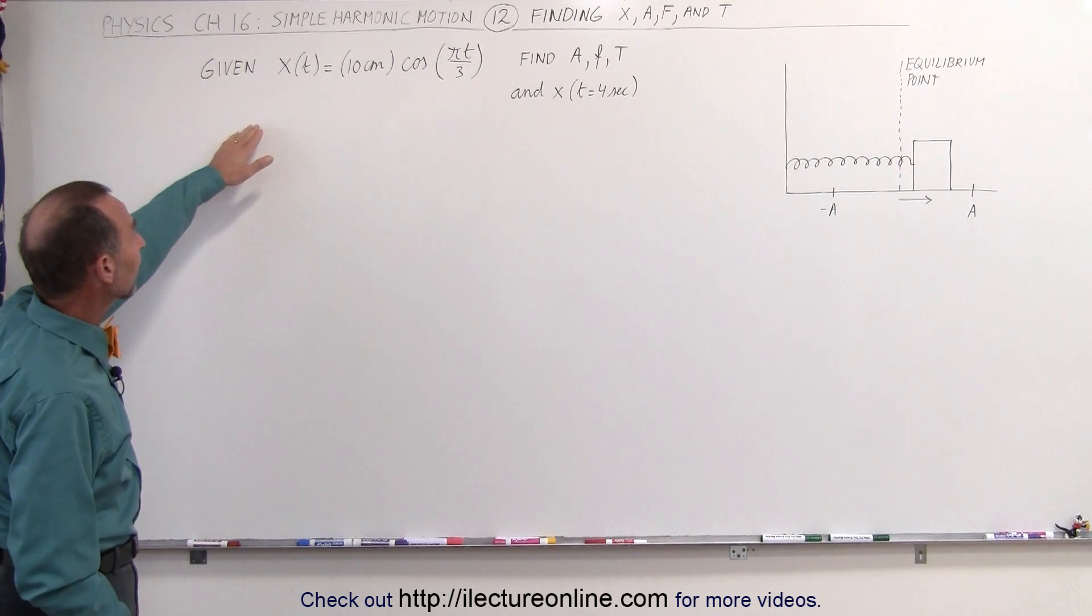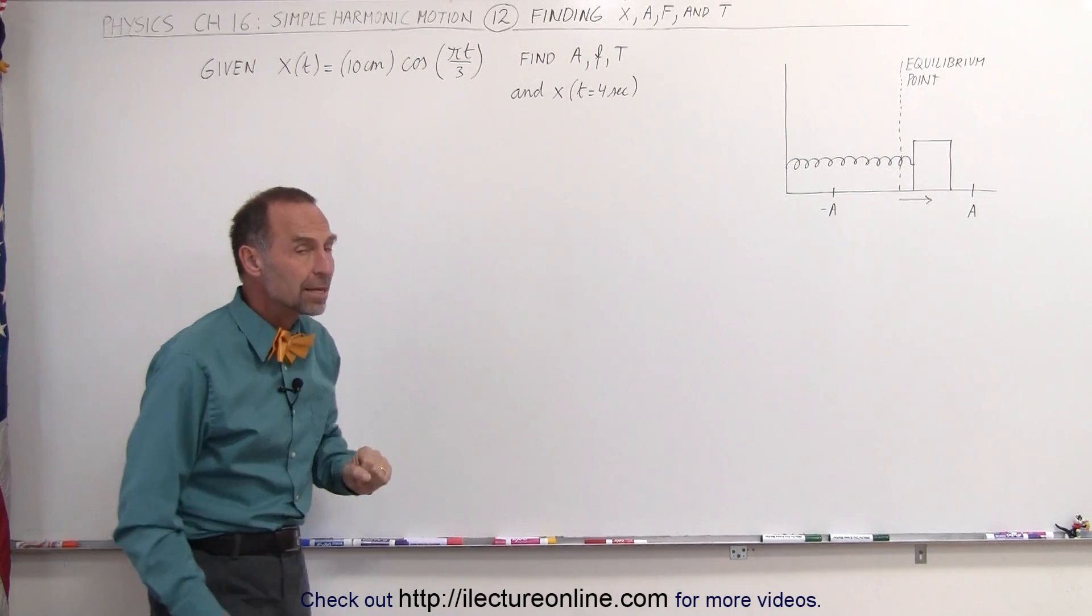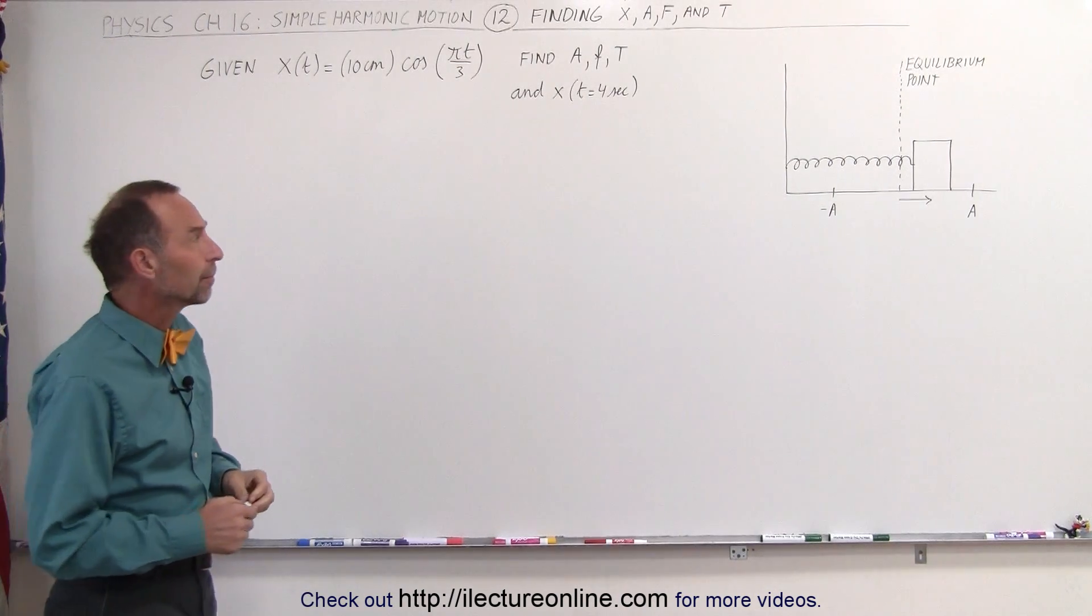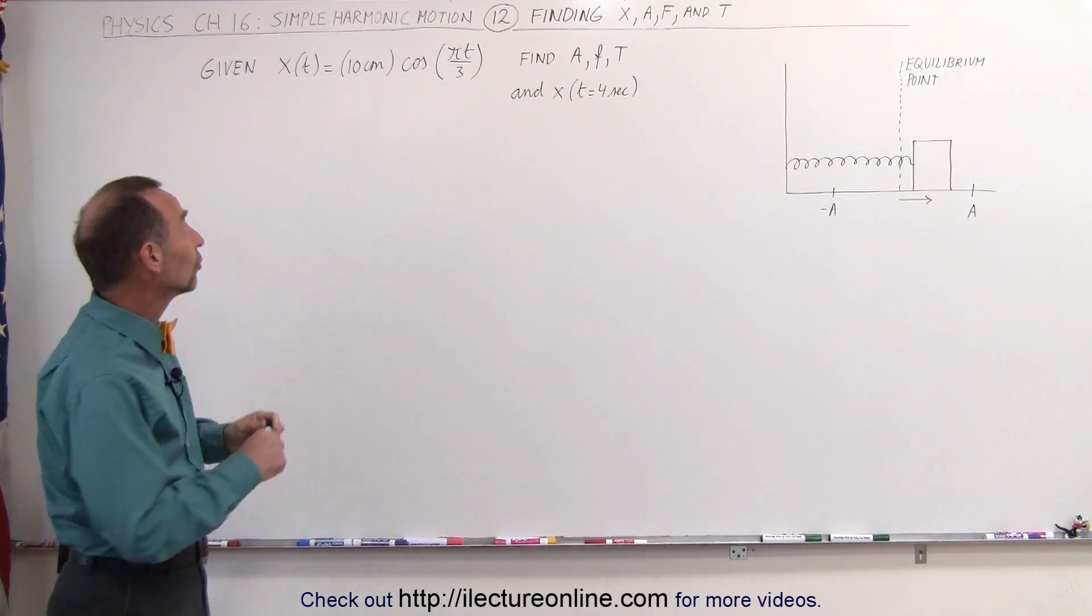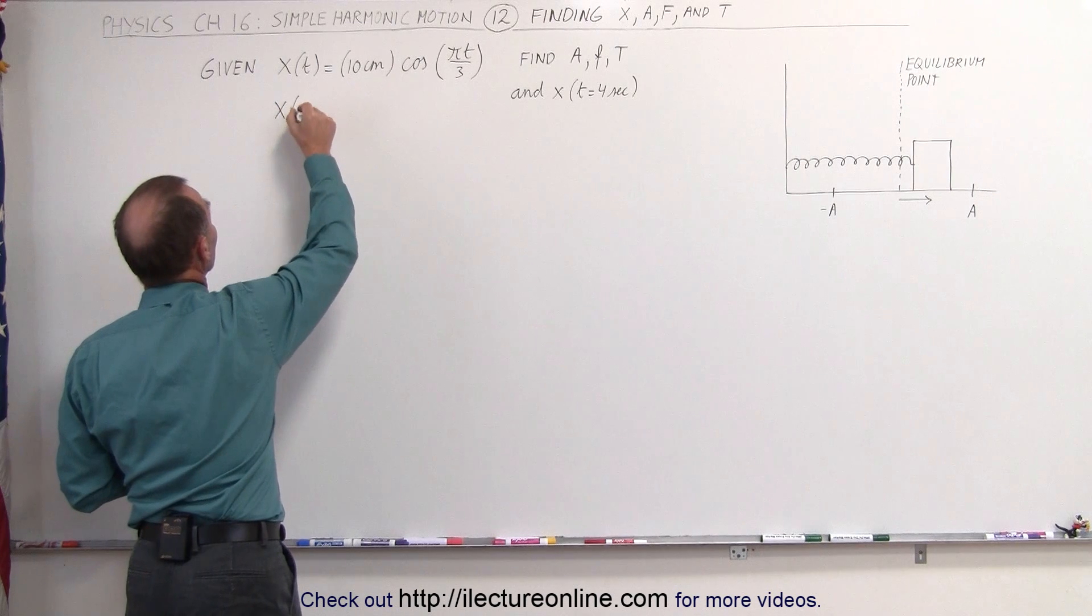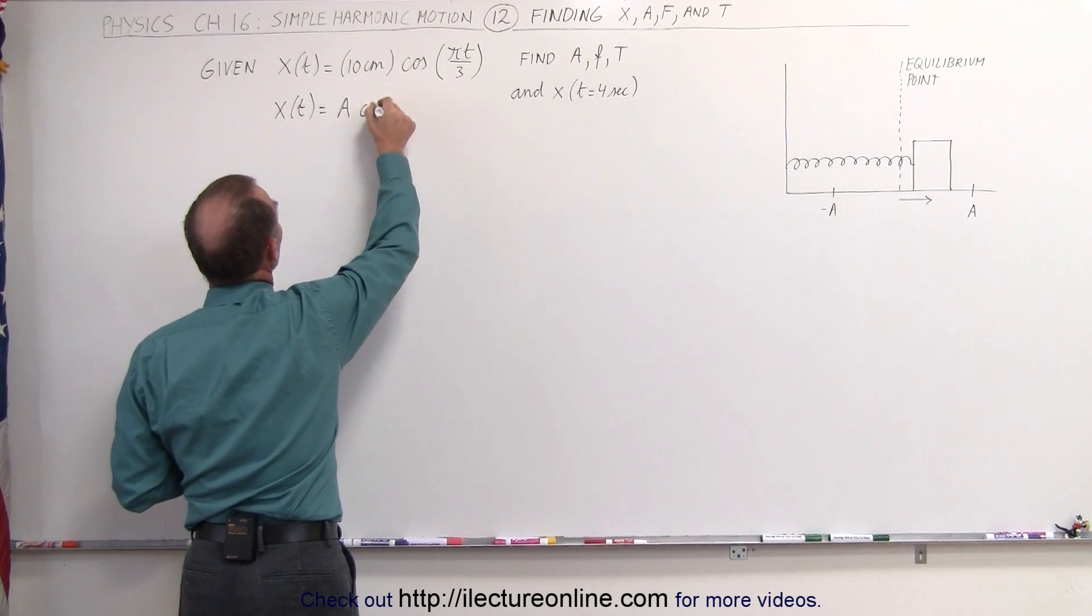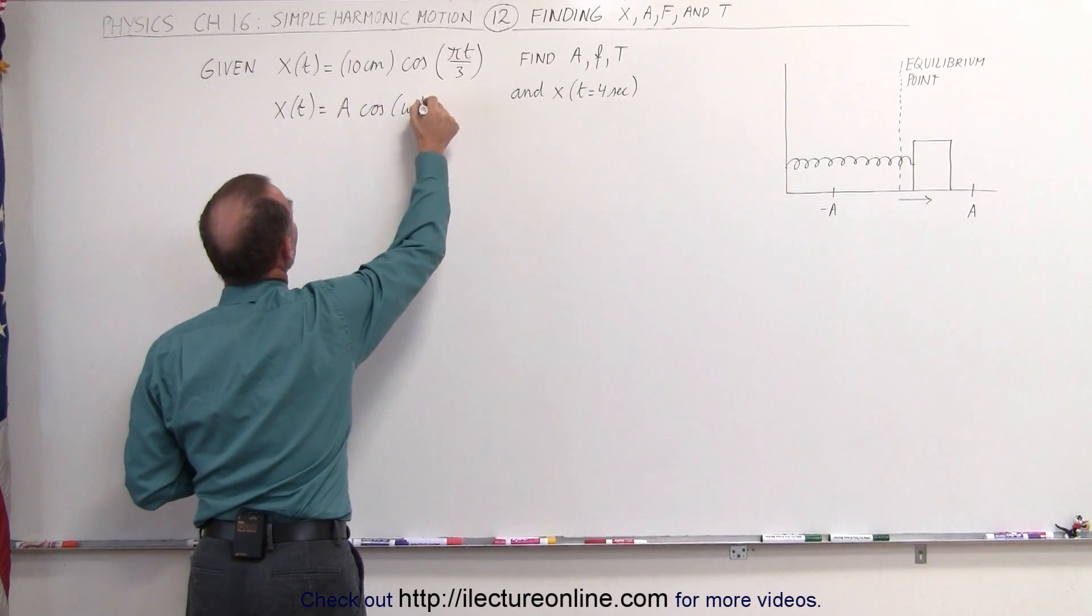So when you're given an equation like this, x of t equals 10 centimeters times the cosine of pi t over 3, how do you find these things? Well, right away you should take the equation in general and say that x as a function of time is equal to the amplitude times the cosine of omega t.